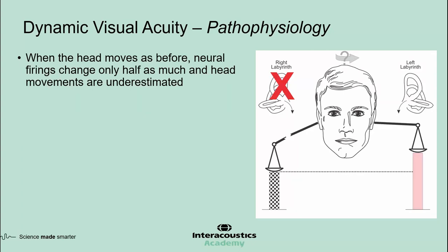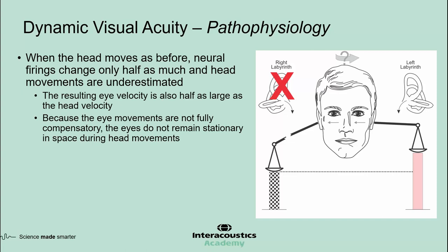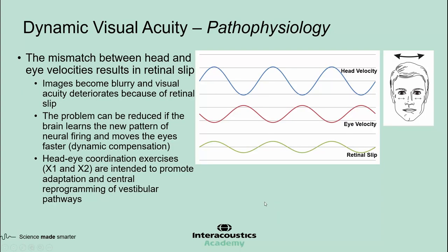In patients with a unilateral loss of vestibular function, when the head moves, neural firings change only half as much, and as a result, head movements are underestimated. That means the eye velocity is also half as large as the head velocity. Because the eye movements are not fully compensatory, the eyes do not remain stationary in space during head movements. This mismatch between head and eye velocities causes retinal slip, so images do not stay stationary on the retina and become blurry during head movements.